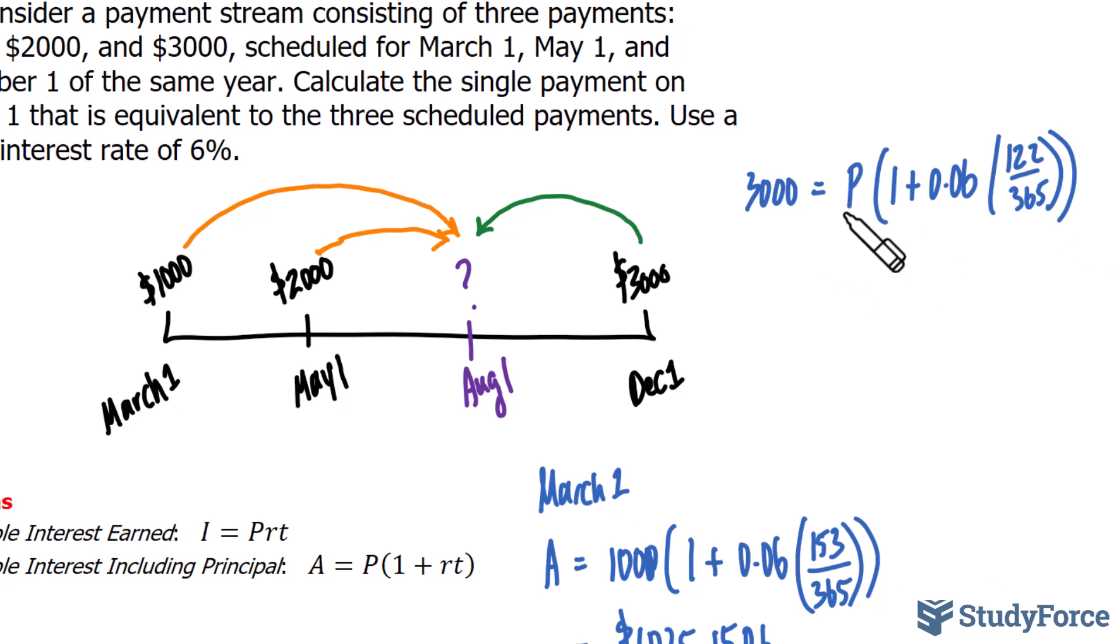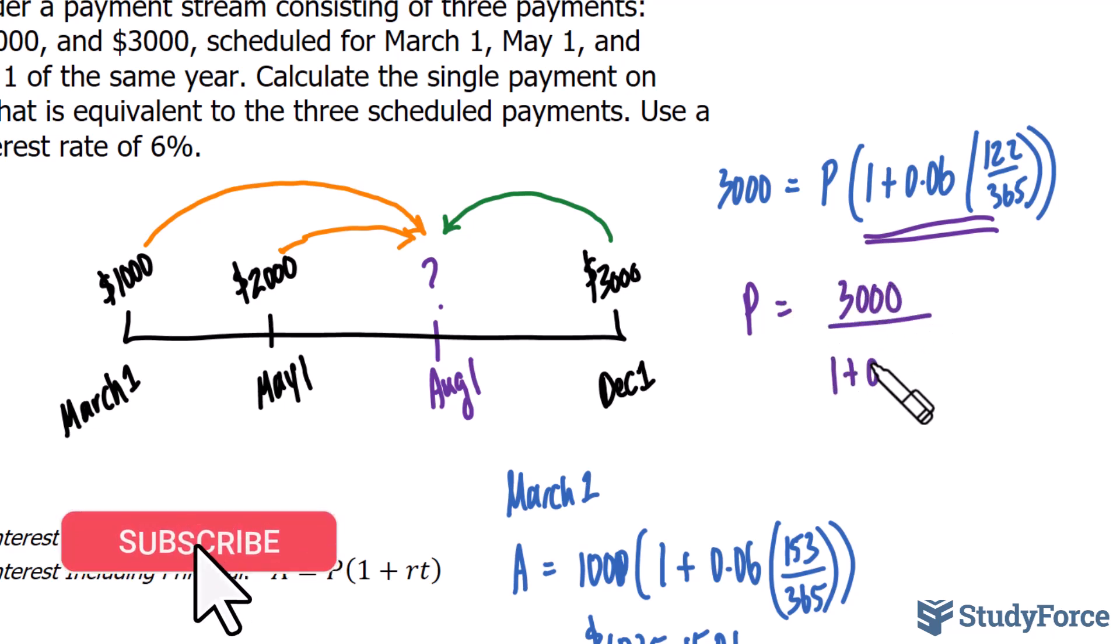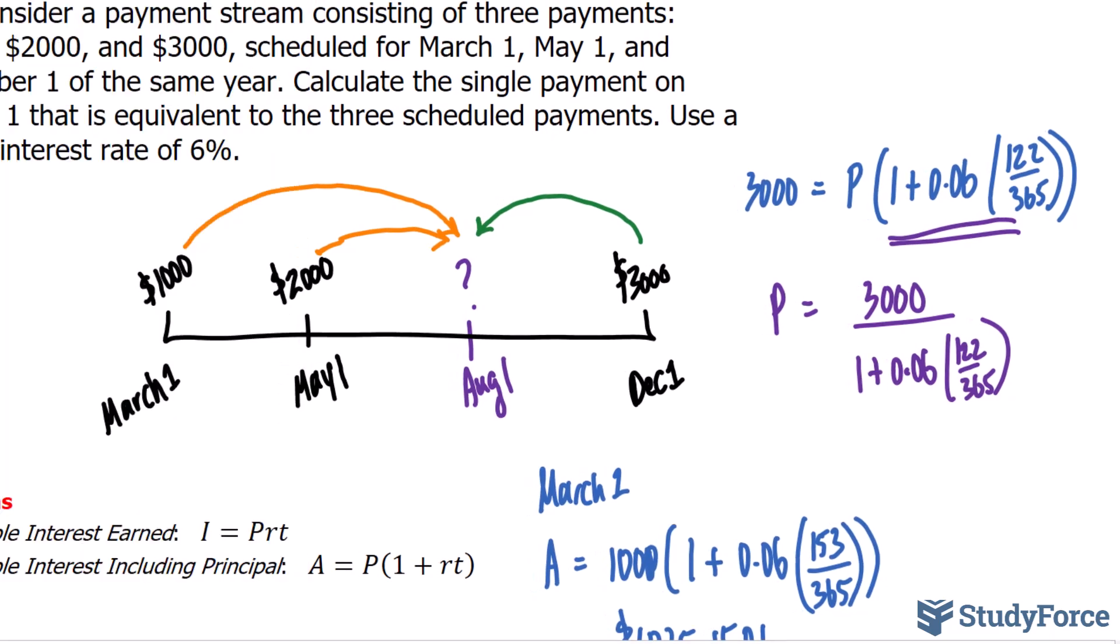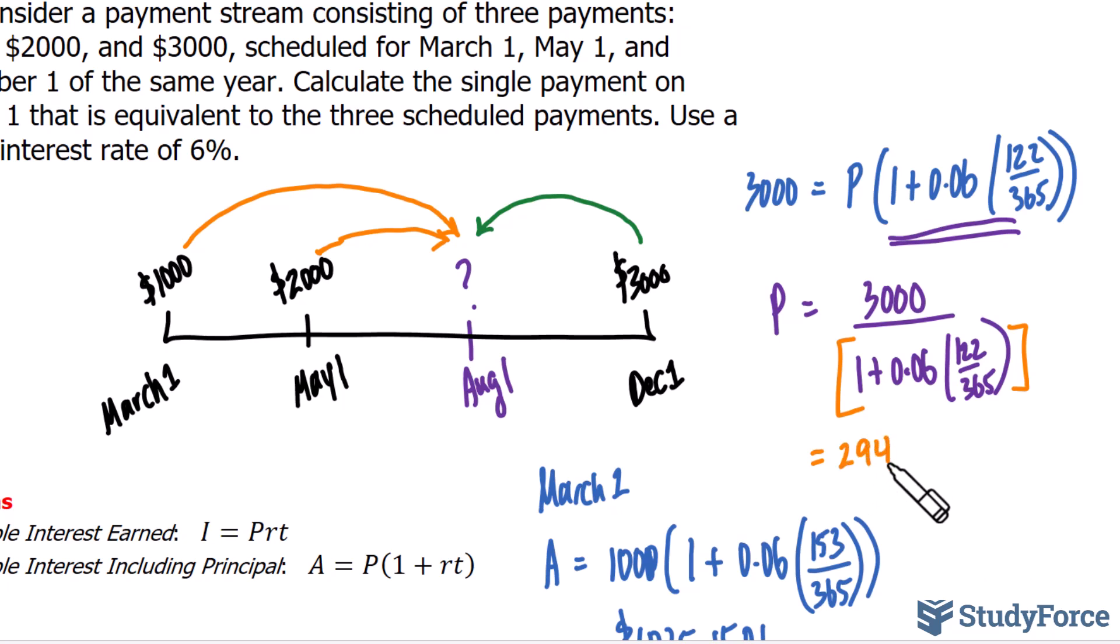And we're solving for P. So, we'll compute this. And then divide both sides of the equation by what we find to find P. Or in other words, P = 3,000 ÷ (1 + 0.06 × 122/365). Let's go ahead and compute that. And ensure that this is in brackets. We end up with a value of 2,941.0184.